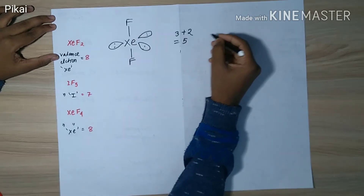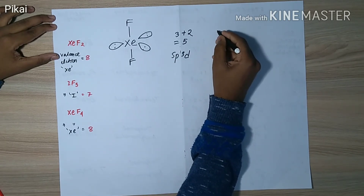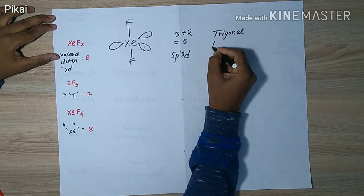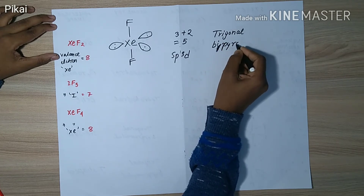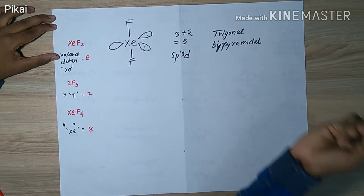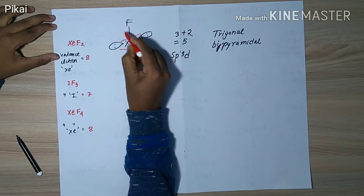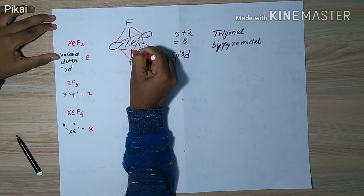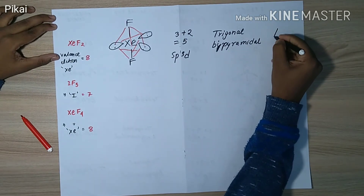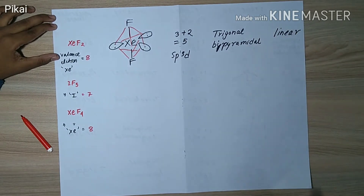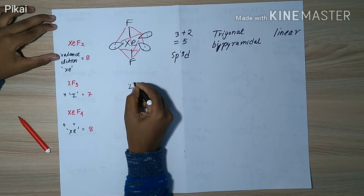This five denotes five orbitals: one s, three p, and one d. The geometry is trigonal bipyramidal, with two pyramids one above and one below the trigonal structure. If we don't consider the lone pairs, the molecular shape is linear.